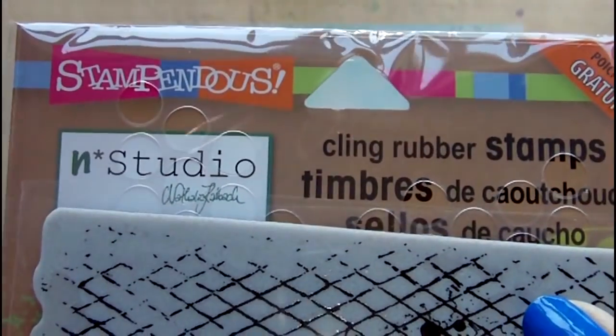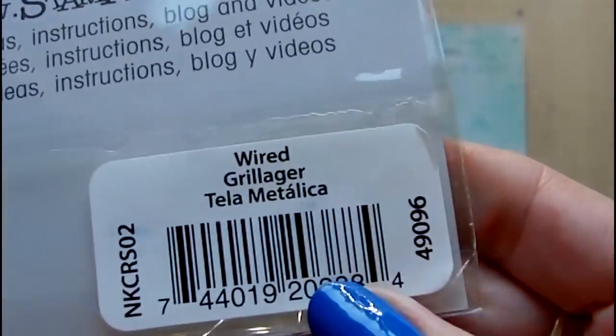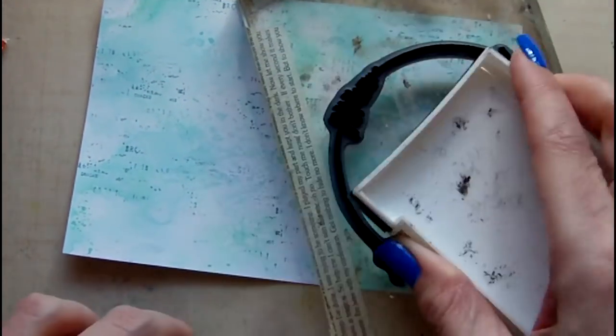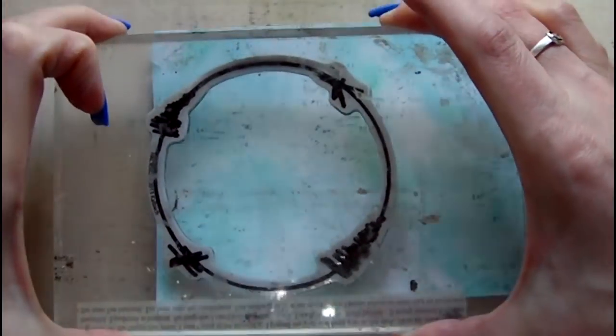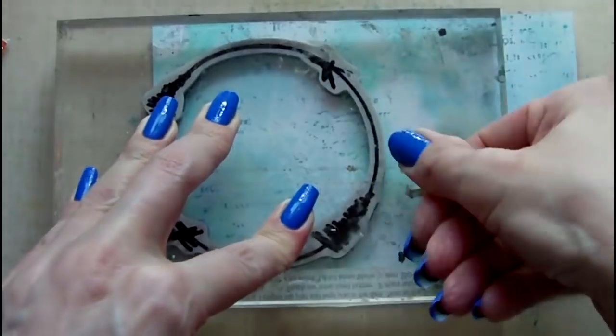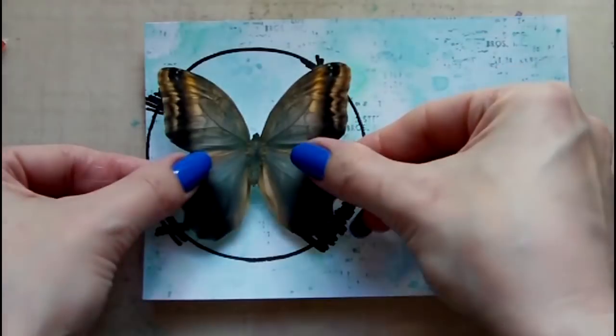This is a stamp set by Stamp End called Wired. I'm selecting the ring of barbed wire and stamping it using VersaFine ink onto my postcard. I stamped the ring twice to create a frame for a collage image. It's a digital download of a butterfly that I've cut out.